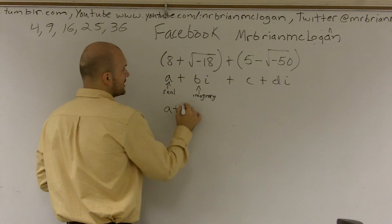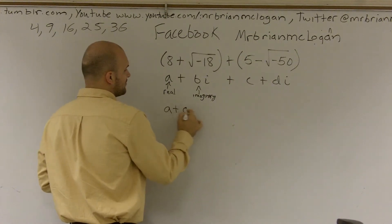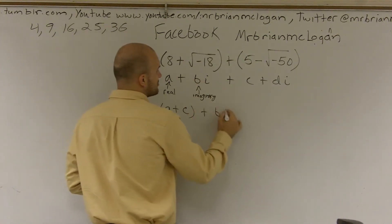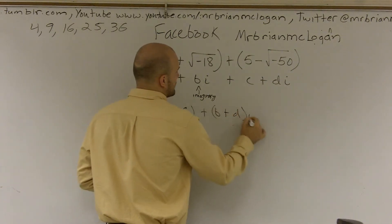So you add the real, which would be A + C, and then you add the imaginary, which would be B + Di.